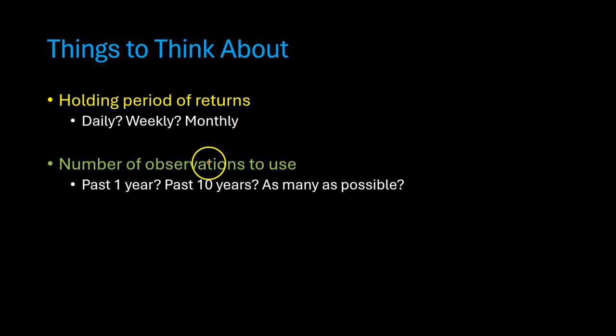Secondly, how many observations should we use? Should we use past one year's worth of data? Of course this point here is related to our holding period of returns as well. So for example if we are using weekly returns and we are only going to use past one year of returns then we will only have 52 observations because there are 52 weeks in a year. Using monthly returns would mean that we would only have 12 observations.